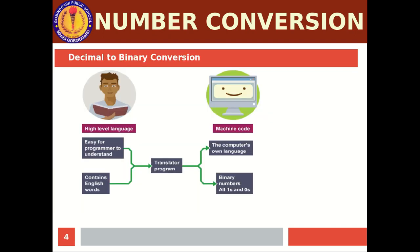We need to convert decimal numbers to binary because the decimal language is a high level language which human beings can understand, while binary numbers are digital signals which computers can understand. We need a translator program which translates high level language into machine language so that the computer can understand it. Now we will learn how to convert decimal numbers to binary — how a compiler converts.